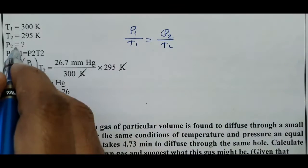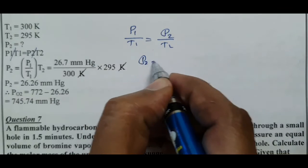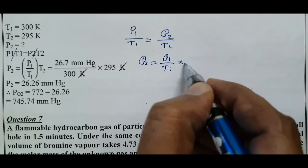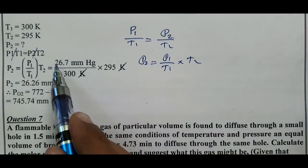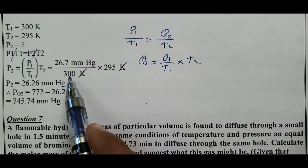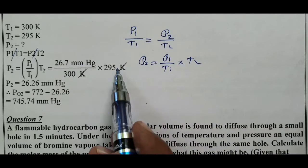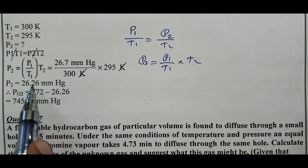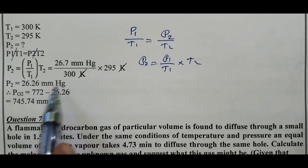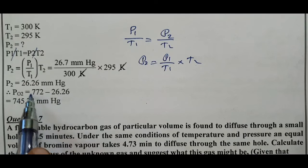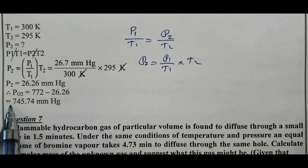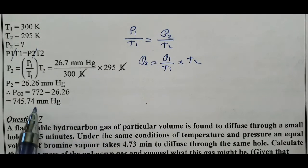Solving for P2: P2 = P1/T1 × T2 = 26.7/300 × 295 = 26.26 mmHg. Therefore, partial pressure of O2 = 772 − 26.26 = 745.74 mmHg.